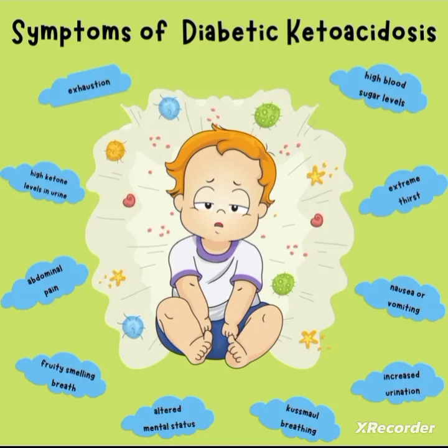The clinical features of diabetic ketoacidosis include high blood sugar level more than 500, extreme thirst known as polydipsia, nausea and vomiting, and increased urination known as polyuria.